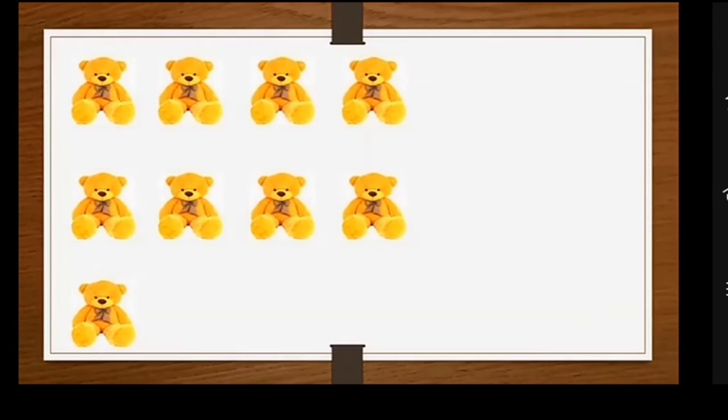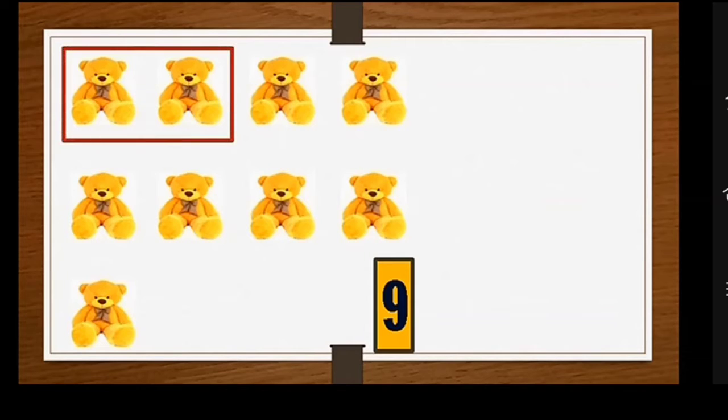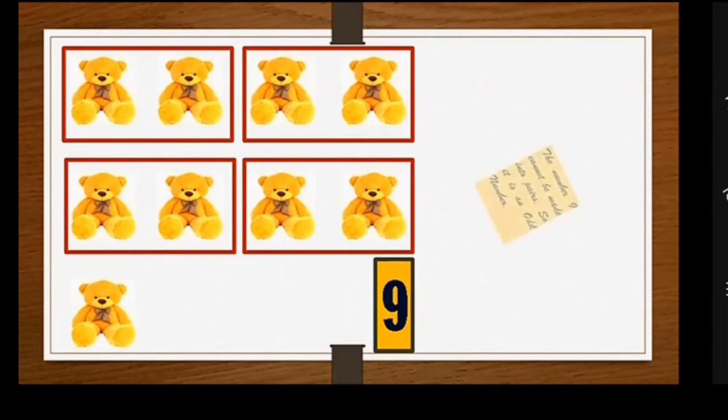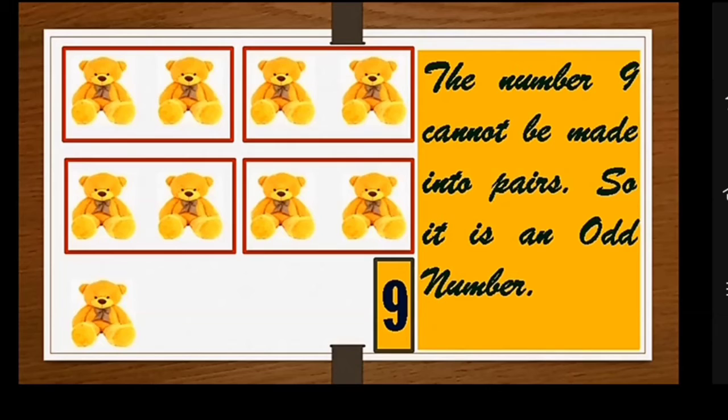Now let us take these nine teddy bears. How many? Nine. And make them into pairs. One, two, three, four. Oh, this little teddy bear is feeling so odd as it is left alone and doesn't have a pair. Therefore, it implies that the number nine cannot be made into pairs, so it is an odd number.